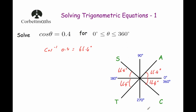Going through the quadrants: in quadrant A, all are positive, so cos of 66.4° gives 0.4 — that works. The second quadrant, only sine is positive, so no. The third quadrant, only tan is positive, so no. The fourth quadrant, cosine is positive, so that works also. So our two angles of interest are in the first and fourth quadrants.